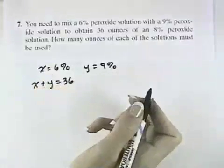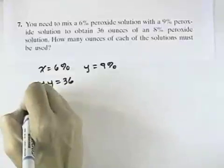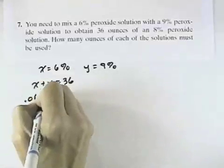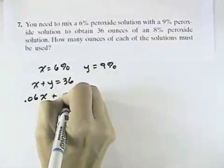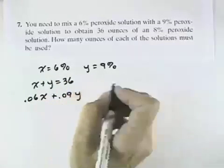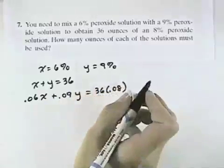And also that final solution should be 8%, so we'd have 0.06 peroxide times the number of ounces x plus 0.09 for 9% peroxide times the quantity y should equal the total quantity times the 0.08 for 8% peroxide solution.